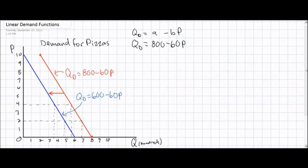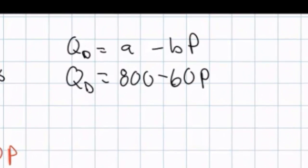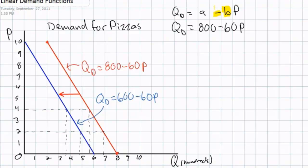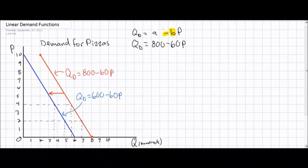In this part of the lesson, we're going to look closely at the B variable in a linear demand equation. Recall that the B variable is an indicator of the slope of demand. The B variable has a negative sign in front of it because the slope of a demand curve will always be negative. There will always exist an inverse relationship between the price of a good and the quantity demanded. Next we're going to talk about things that can cause a change in the B variable and show how that would affect the demand curve.